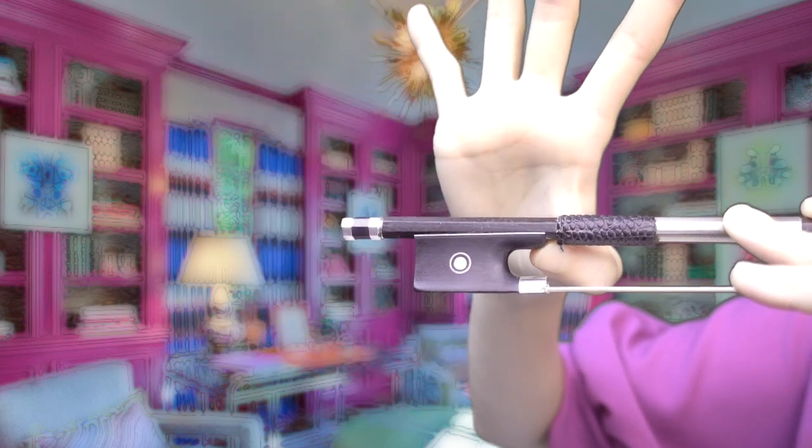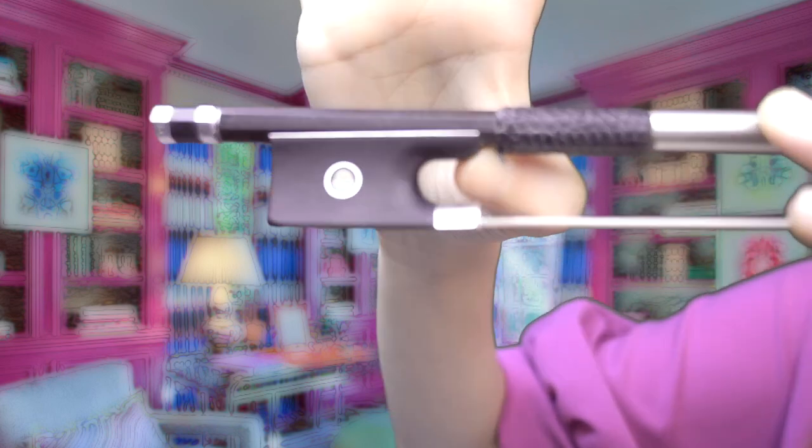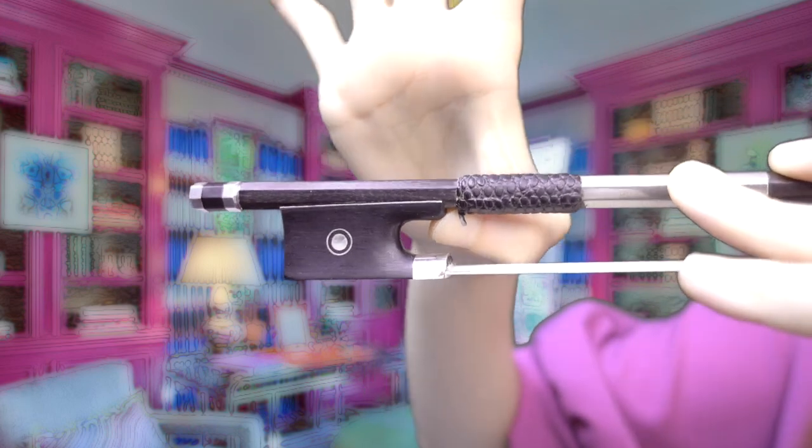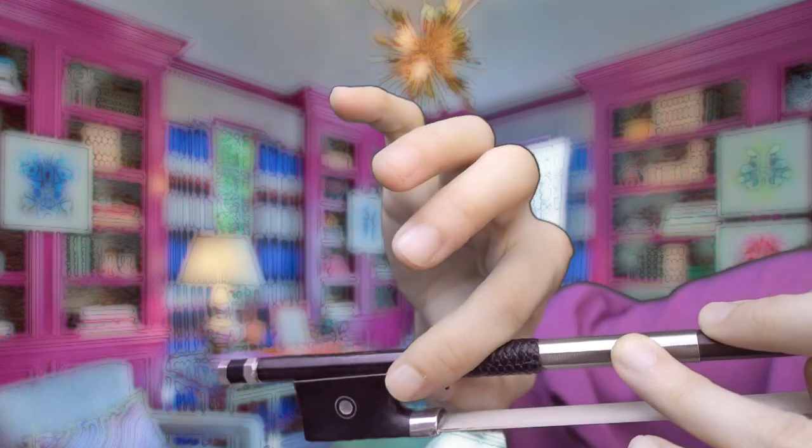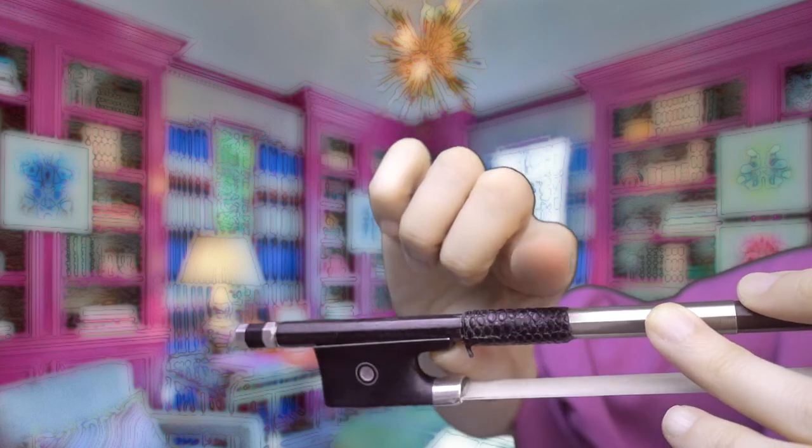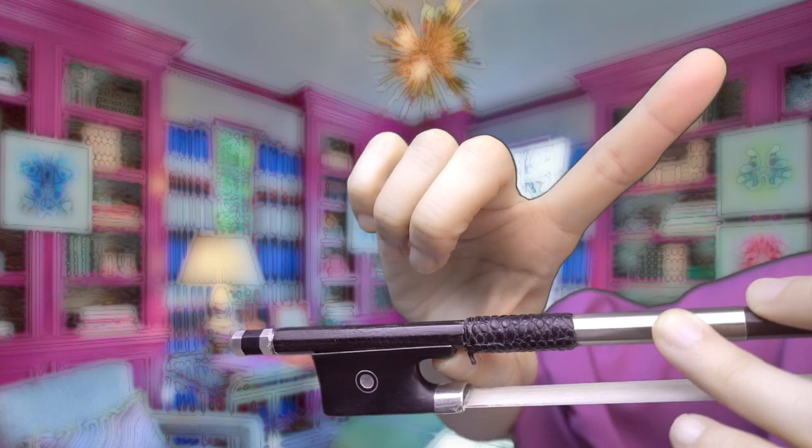And for me, that is about there. And I will keep my thumb right there, just like I mentioned. And it will look like this from the other side. And it's bent, as you can see. And the index finger will go on the leather. But you have to make sure not to hook it. Try not to hook it, but just rest it very gently on the leather part.